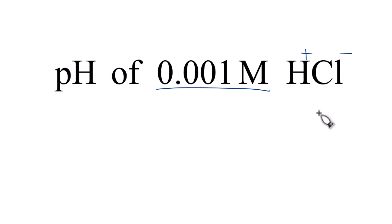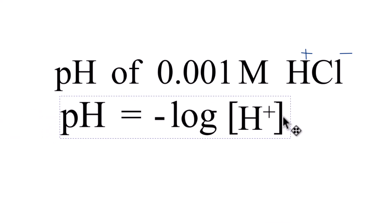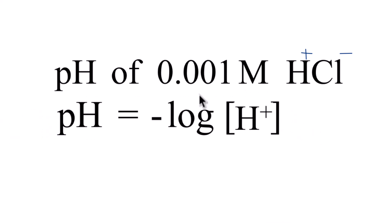So that's important because we can use this equation here to figure out the pH of our 0.001 molar solution. We're going to take the negative log of the concentration, the molarity, of H+, right here, like this.